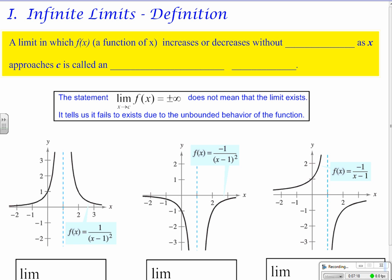Let's look at the definition of infinite limits — really the definition of vertical asymptotes. A limit in which f of x increases or decreases without bound as x approaches c is called an infinite limit. The statement that the limit as x goes to c of f of x equals plus or minus infinity does not mean the limit exists. It tells us the limit fails to exist because there is unbounded behavior of the function.